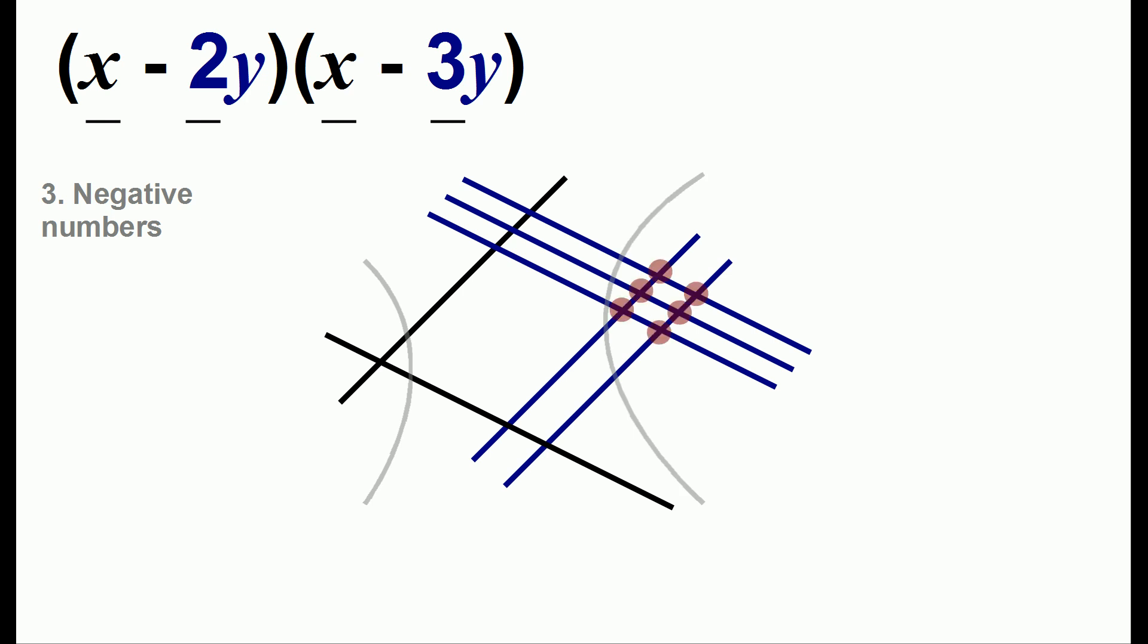Here we have six dots and to know what the dots represent we look at the color of the lines. We have the intersection of two blue lines and each blue line is a negative y. So we'll have a negative y times a negative y which is y squared. So that means we have six y squared.